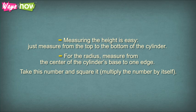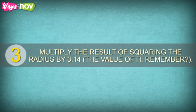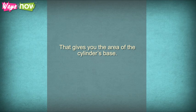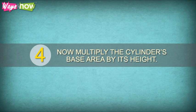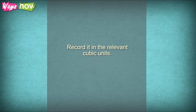Take this number and square it. Multiply the number by itself. Multiply the result of squaring the radius by 3.14, the value of pi. That gives you the area of the cylinder's base. Now multiply the cylinder's base area by its height. The figure that you come up with is the volume of the cylinder, recorded in the relevant cubic units.